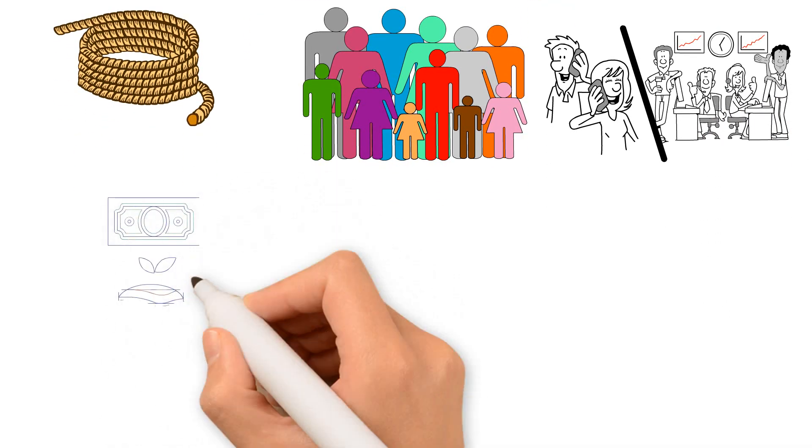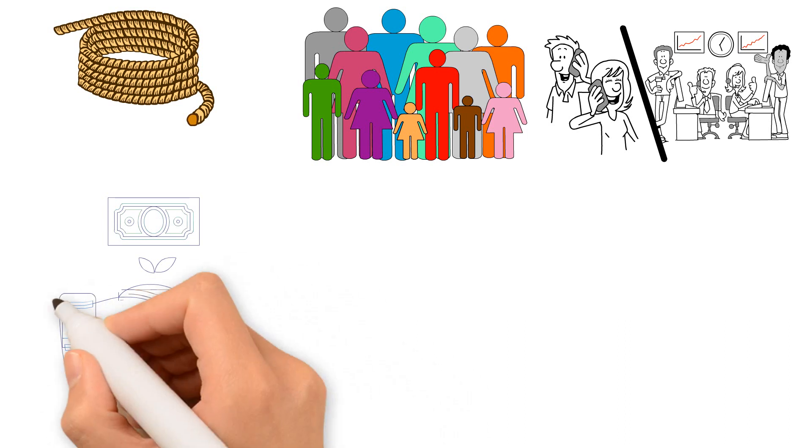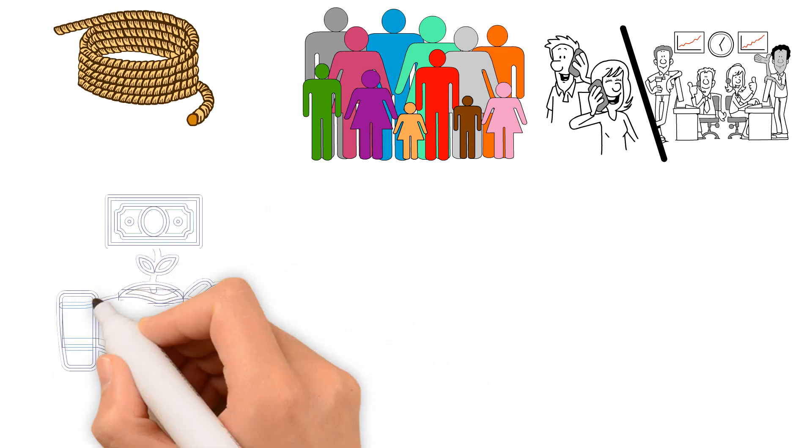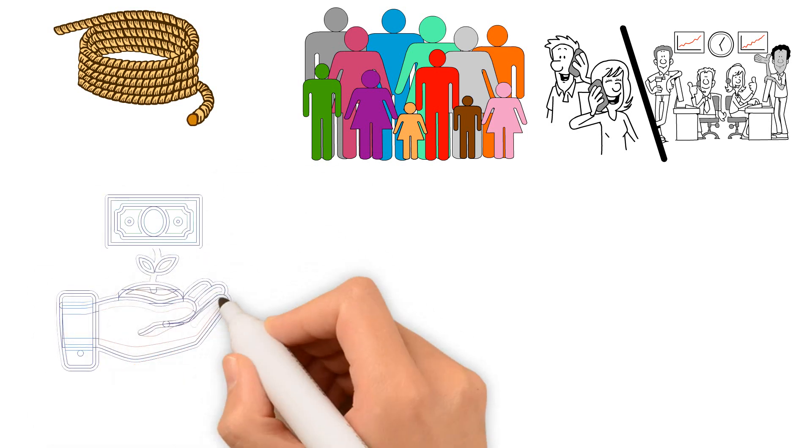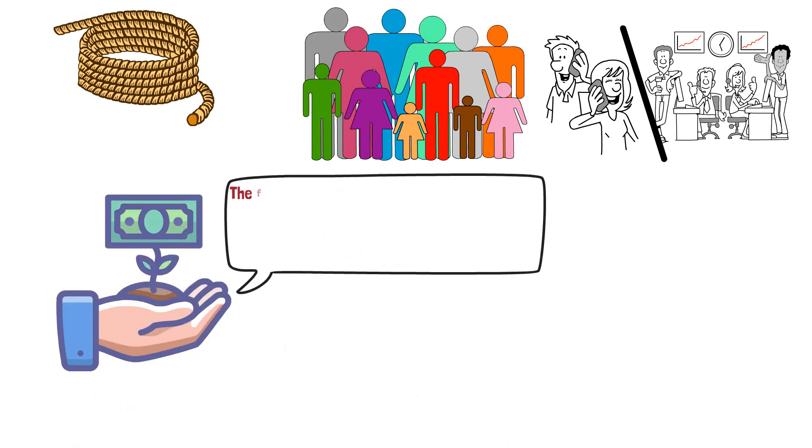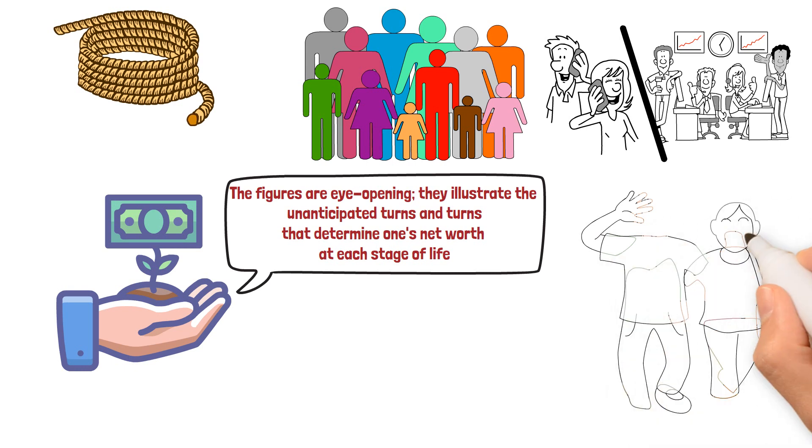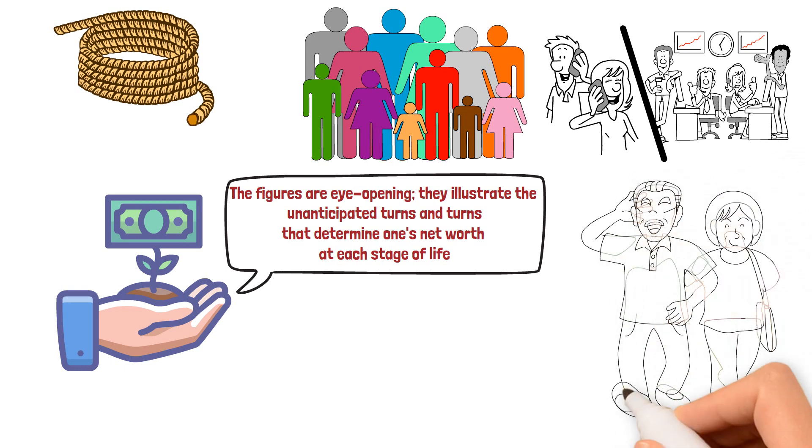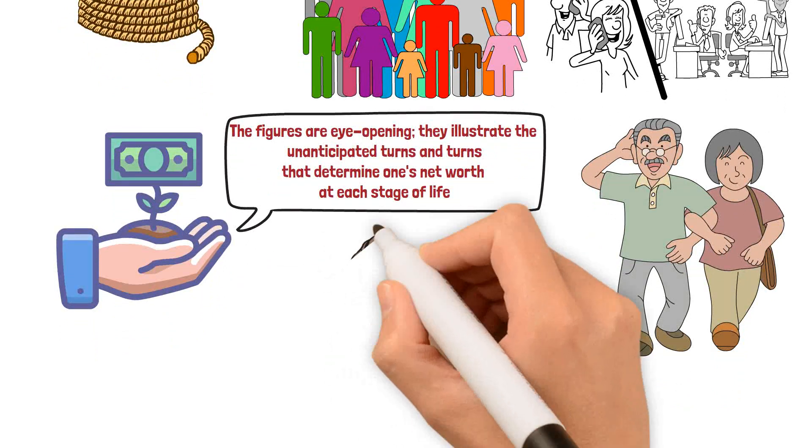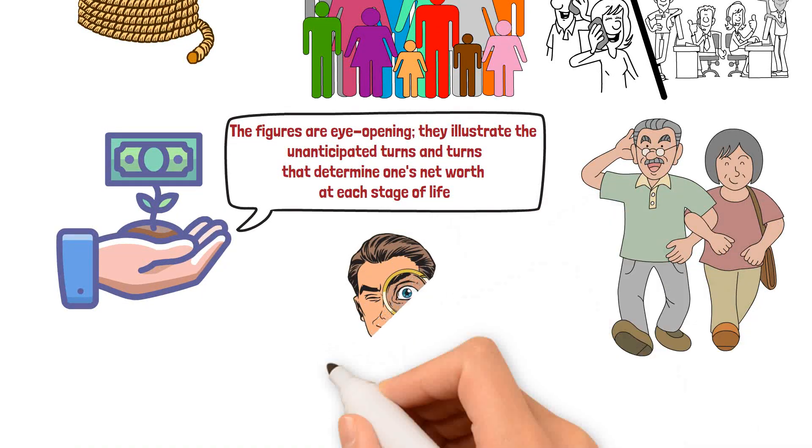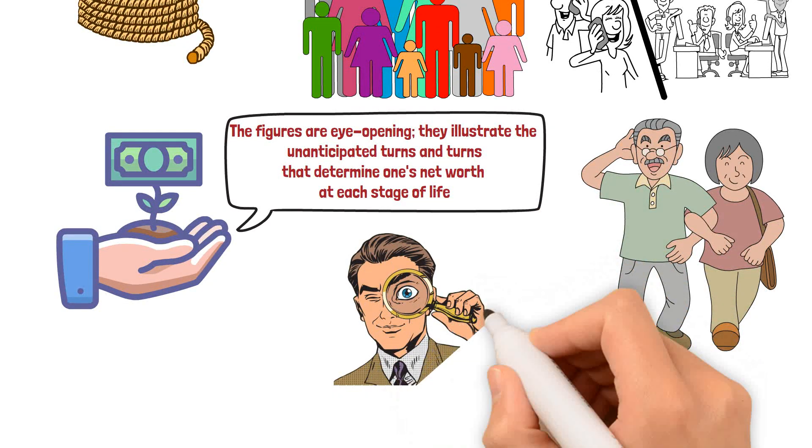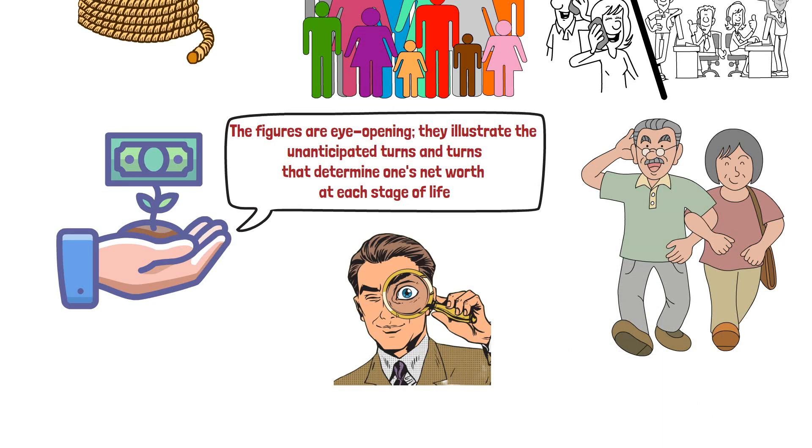Ironically, it's during these years that significant investments, purchases, and a more sophisticated grasp of financial responsibility are made. The figures are eye-opening. They illustrate the unanticipated turns and turns that determine one's net worth at each stage of life. Come along as we untangle the complex dance between personal contentment and work aspirations, examining how people in their 30s manage this important balancing act and, ultimately, shape their financial futures.